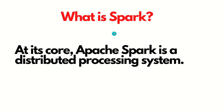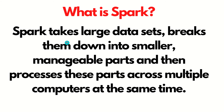What is Apache Spark? At its core, Apache Spark is a distributed processing system. We can say Apache Spark is a big data processing framework which can handle both batch as well as stream processing. Apache Spark takes large data sets, breaks them down into smaller manageable parts, and then processes these parts across multiple computers at the same time.